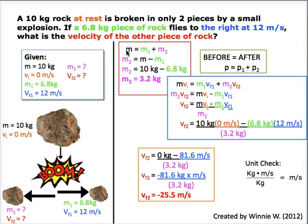Shown in the red box, the original mass is equal to the mass of the first rock plus the mass of the second rock. Therefore, 10 kilograms minus 6.8 kilograms is equal to 3.2 kilograms, the mass of the second rock.